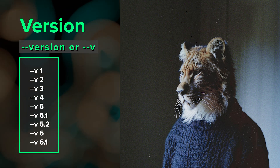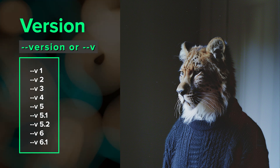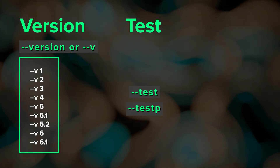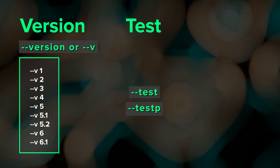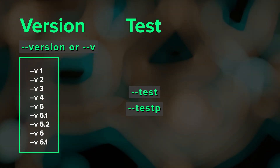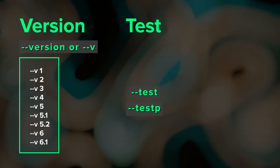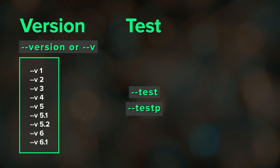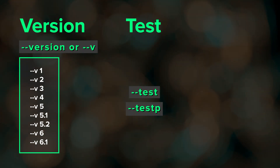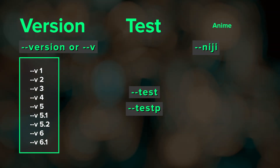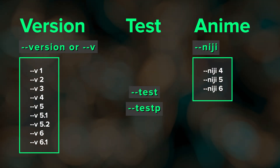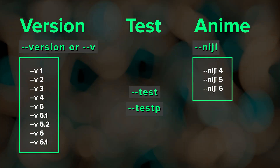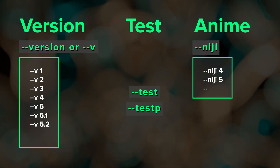These aren't the only Midjourney models available. Test and Test P were intermediary models between v4 and v5. They do not use --v, but instead can be called with --test or --testp. Midjourney also has anime-trained models which can be called by including --niji followed by the model number.